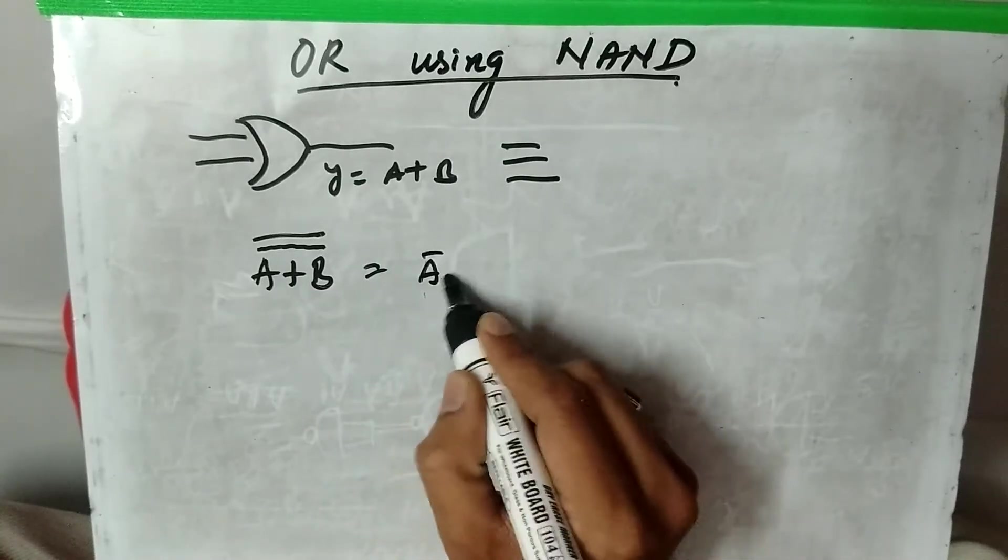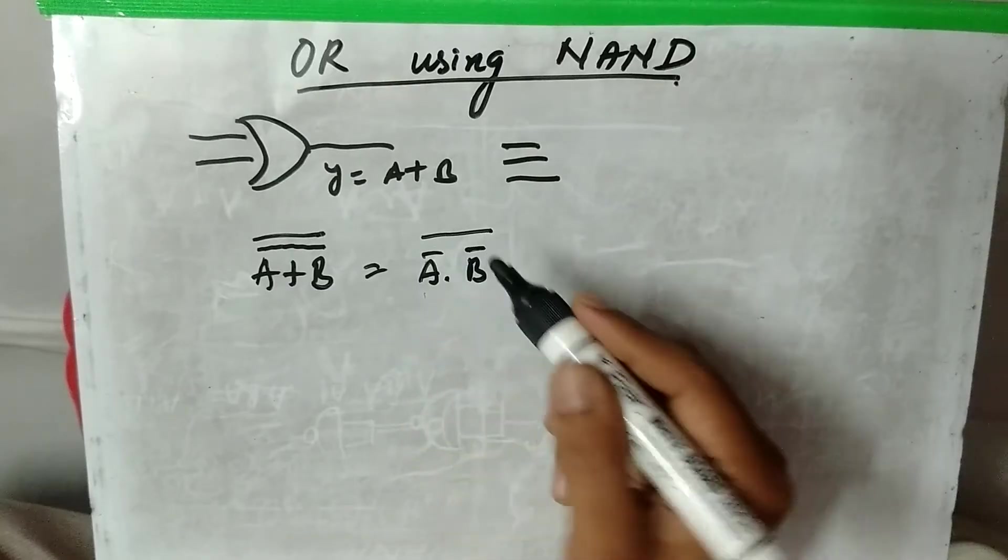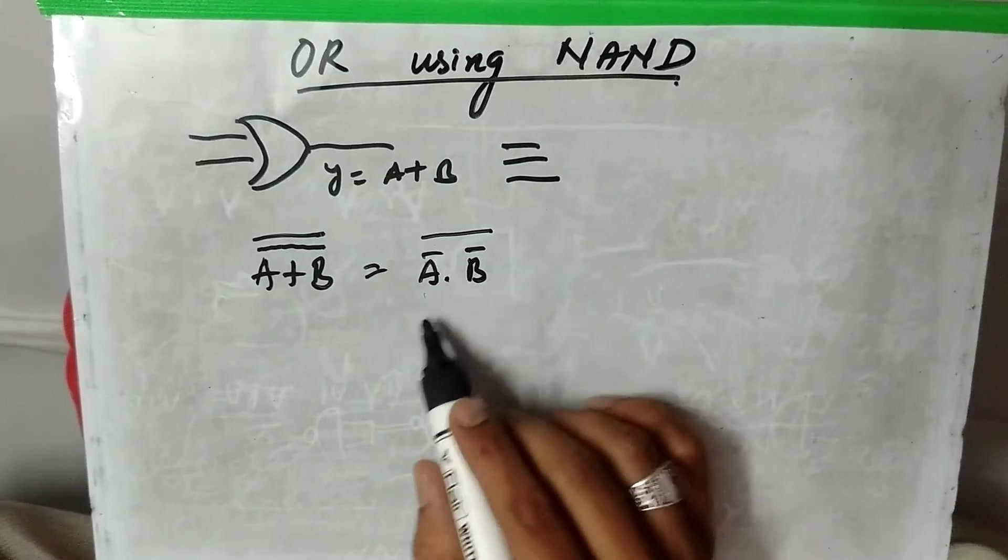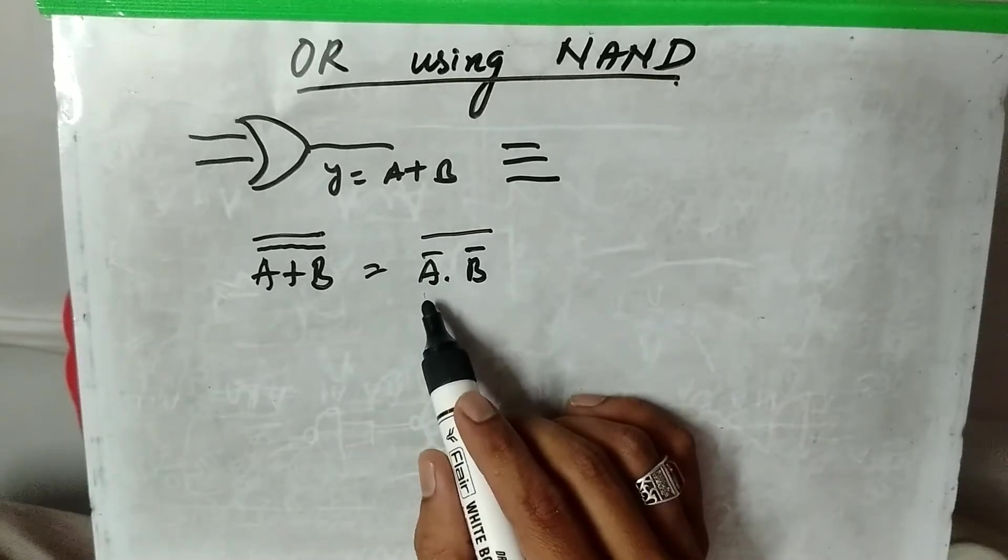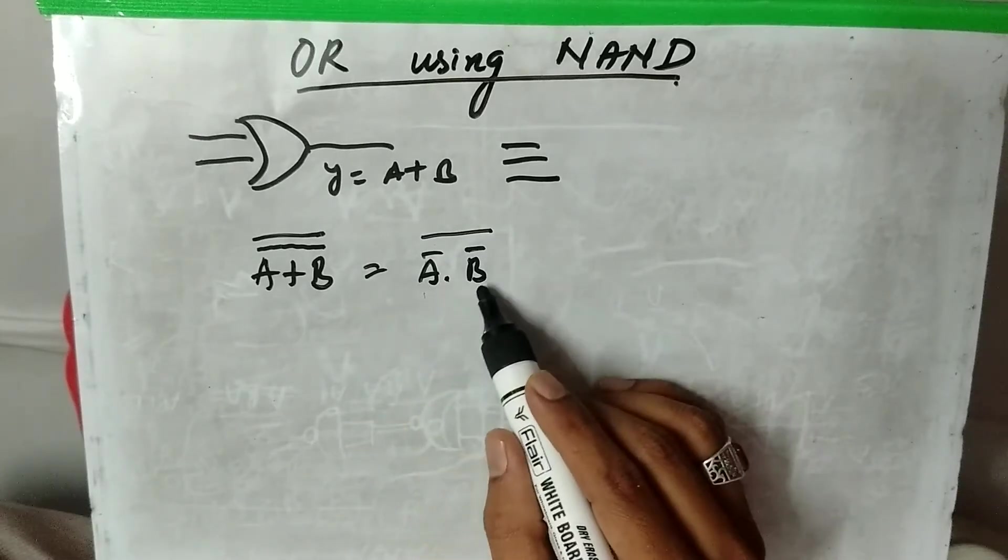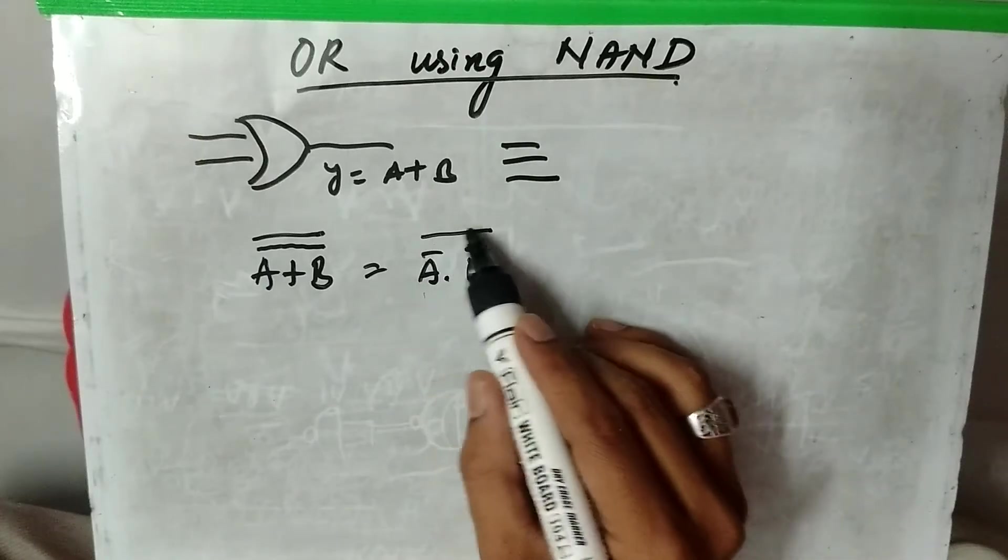Then you will get A dash dot B dash whole dash. So now you can see here it is nothing but the NAND gate output. So our A input will be A dash and B input will be B dash.